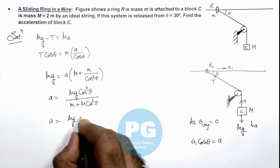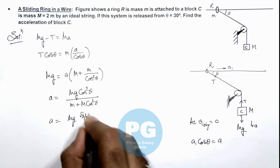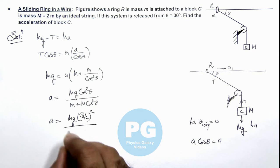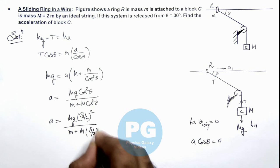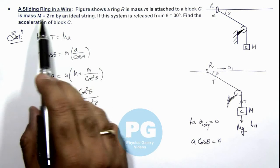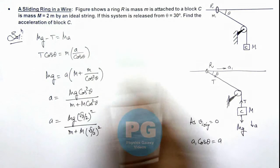So this will be root 3 by 2 whole square divided by small m plus capital M root 3 by 2 whole square. We are also given that the total mass of block is twice the mass of ring.